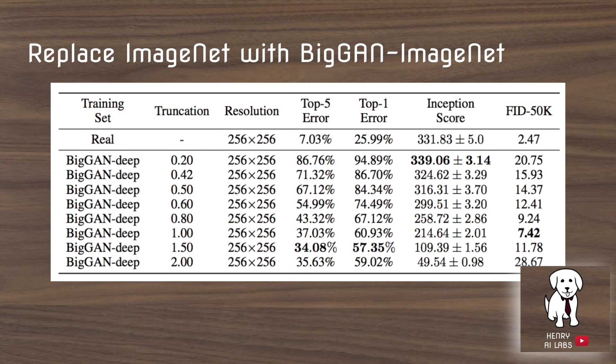The most interesting finding is that the error gap between the model trained on real ImageNet data and the model trained on BigGAN-generated data is very large. The best real-data model achieves 57% top-1 accuracy compared to only 26% for the GAN-generated data, and 34% vs. 7% top-5 accuracy. So even though the images may look realistic, from a classifier's perspective the BigGAN-generated data isn't very useful.